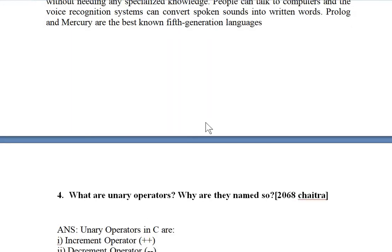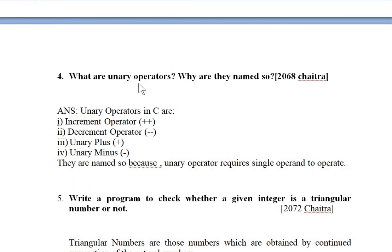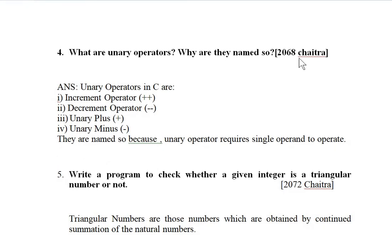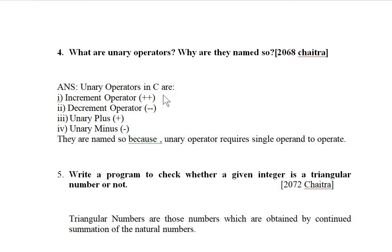The fourth question, asked in 2068 Chaitra, is: what are unary operators and why are they named so? This may be a 2 or 3 mark question. Various unary operators in C are: increment operator (increases a variable's value by 1), decrement operator (decreases a variable's value by 1), unary plus, and unary minus. They are named unary operators because a unary operator requires a single operand to operate.